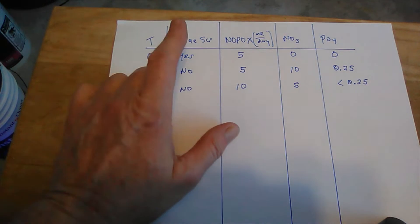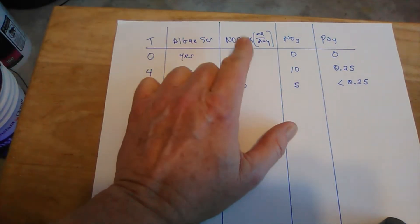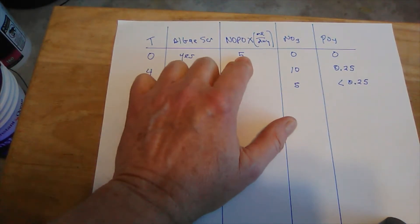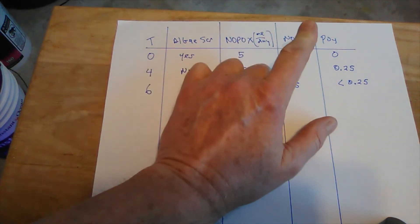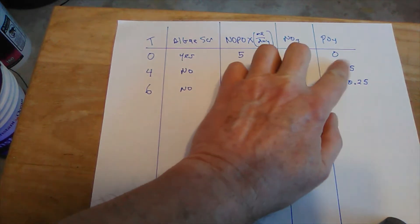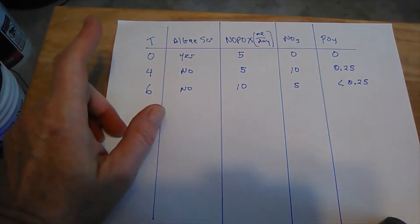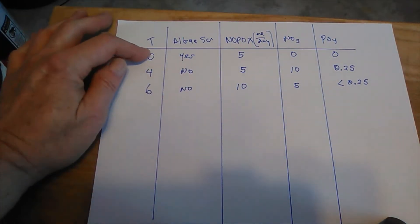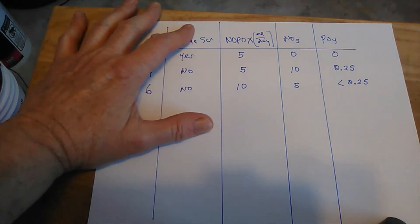At T equals zero, the algae scrubber was running. I was dosing 5 milliliters per day of NOPOX and I was getting undetectable readings on the cheap test kit of nitrate and phosphate. At that point, I took out the algae scrubber.